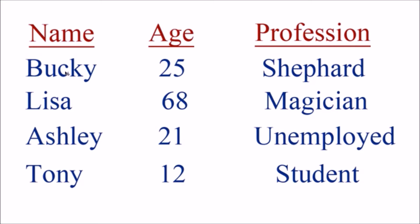The first entry is Bucky, who's 25, and his profession is a shepherd. Each row is an individual entry, so for Lisa's entry it would be name Lisa, age 68, profession magician. Once you have each column with a separate category and each row as a separate entry, it really helps you identify and organize data. If you want to know how old Ashley is, you go to the age category, scroll down to Ashley, and where the two meet is your answer.